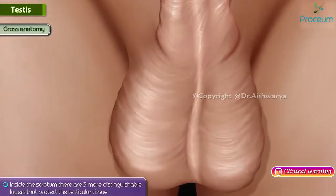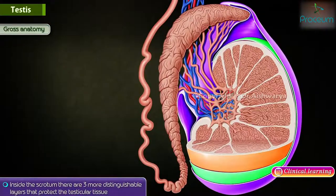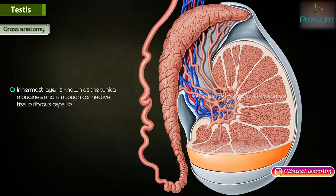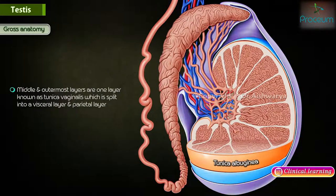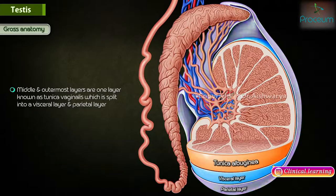Just inside the scrotum, there are three more distinguishable layers that protect the testicular tissue. The innermost layer is the tunica albuginea, a tough connective tissue fibrous capsule. The tunica vasculosa is a highly vascular layer of connective tissue beneath the tunica albuginea. The middle and outermost layers are actually one layer known as the tunica vaginalis, which is split into a visceral layer and a parietal layer.